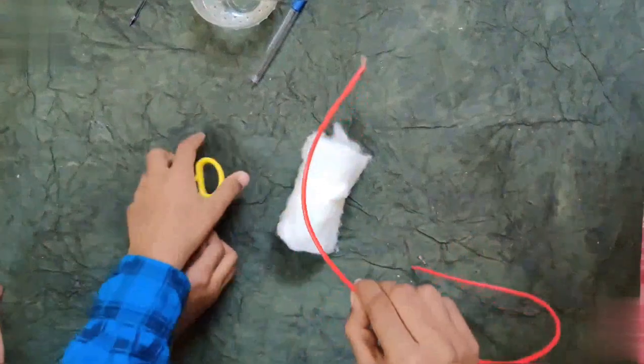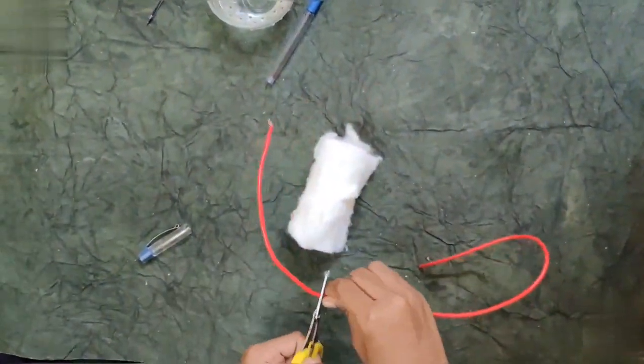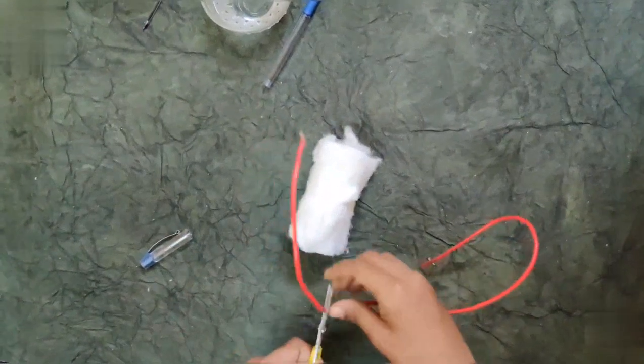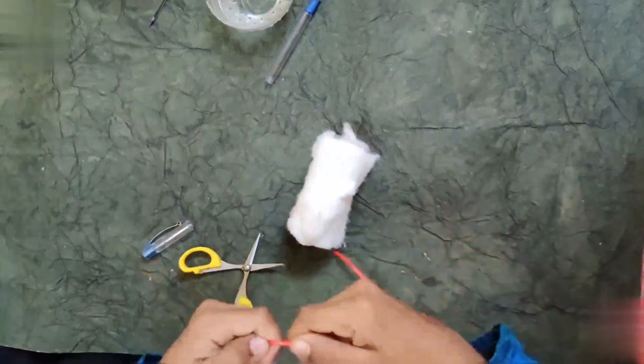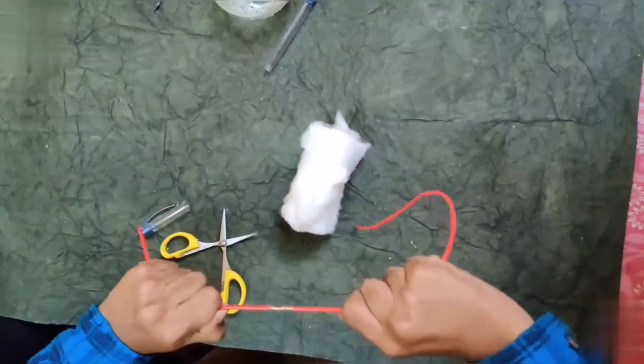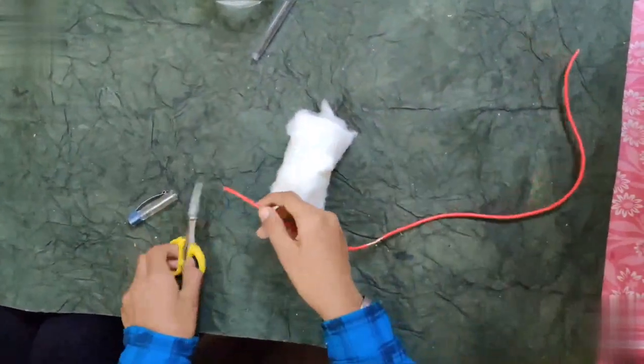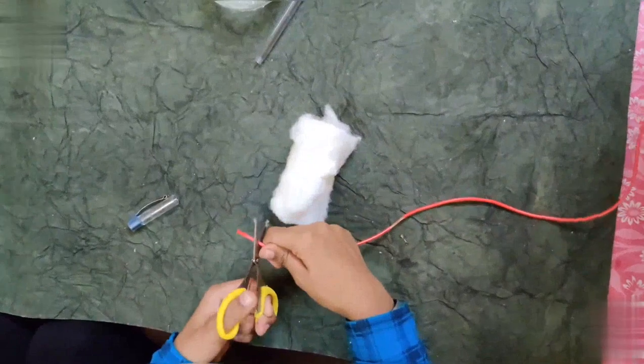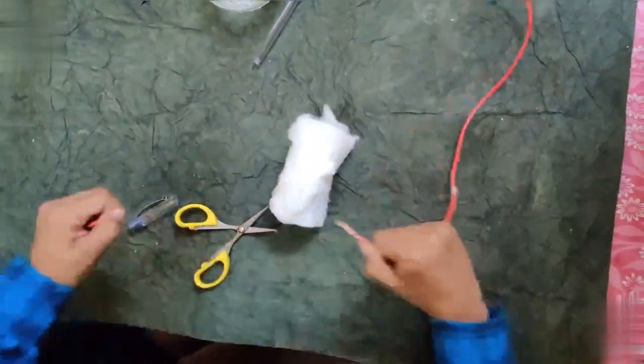Then, we should cut with the scissors. Make sure you don't cut the electric wire fully. We can do it like this. Then, open it. If it's not coming for you, cut into pieces and it will be easy for you.